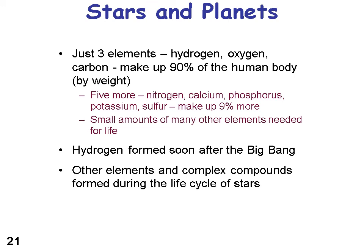Ninety percent of the human body is made up of hydrogen, oxygen, and carbon — mostly water and carbon — and five other elements: nitrogen, calcium, phosphorus, potassium, and sulfur make up another nine percent, bringing it to ninety-nine percent. The remaining one percent of our human bodies consists of small amounts of other elements.